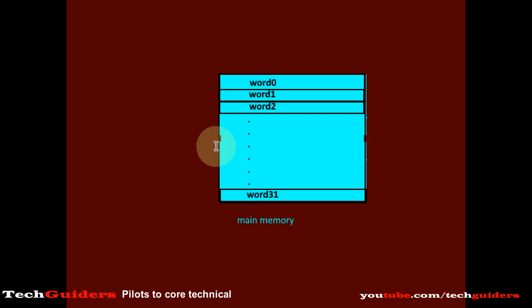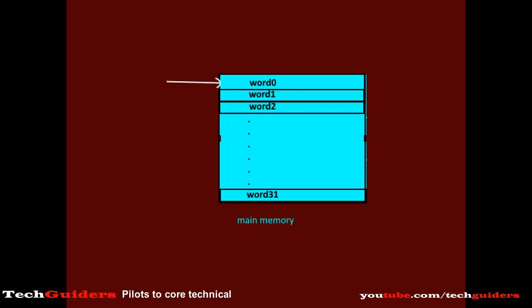Suppose there is a processor request for the first 8 words, word 0 to word 7. Now this unit is acting as a single memory module. Hence within this module it can service only one data request at a time. So while servicing the data request for word 0, it cannot handle any other request — it should wait till the request for word 0 is completed. Suppose the data transfer for each word takes 100 nanoseconds.